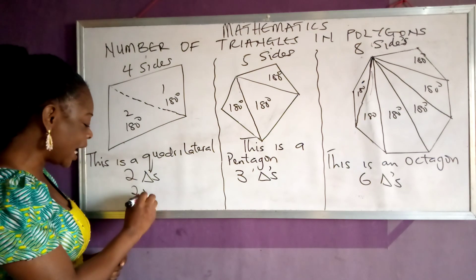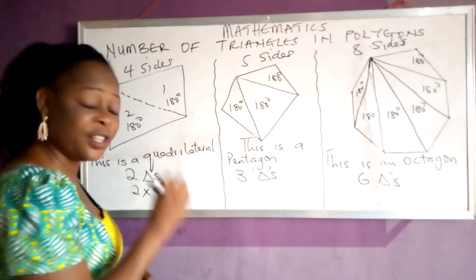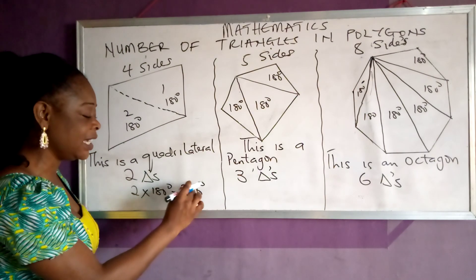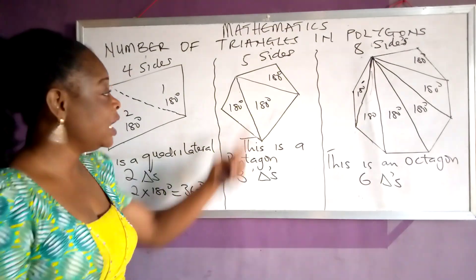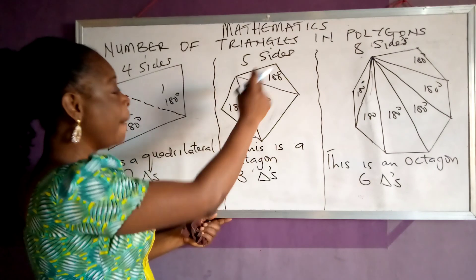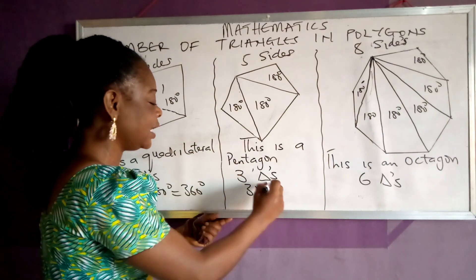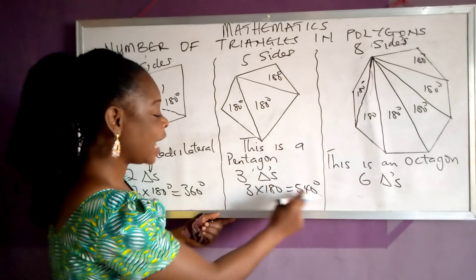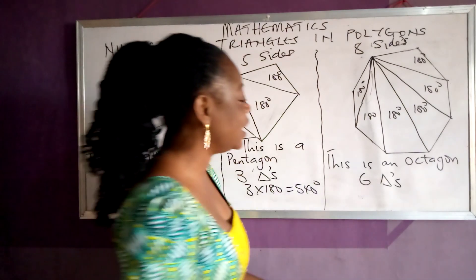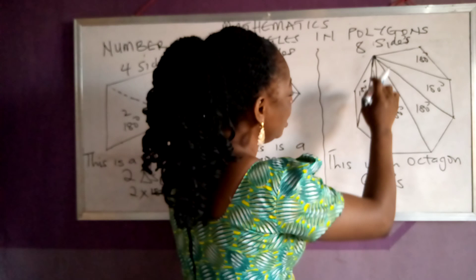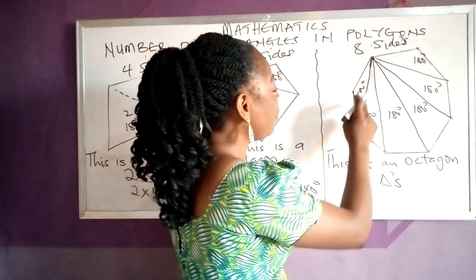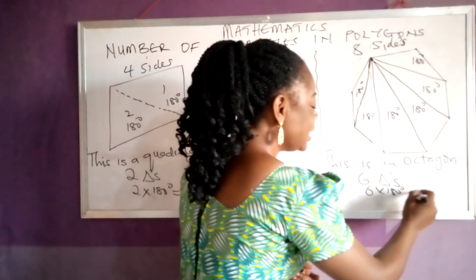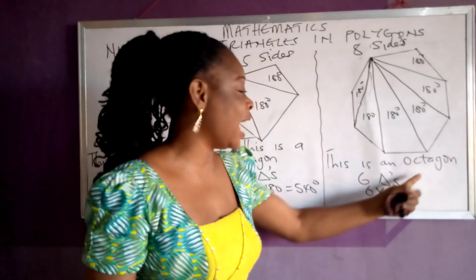Now, these 2 triangles give you 2 times 180 degrees — the sum of angles in any quadrilateral is 360 degrees. For the pentagon, the sum of angles is 3 times 180, which equals 540 degrees. For the octagon with 6 triangles, the sum of angles is 6 times 180 degrees, which gives you the total sum of interior angles in an octagon.